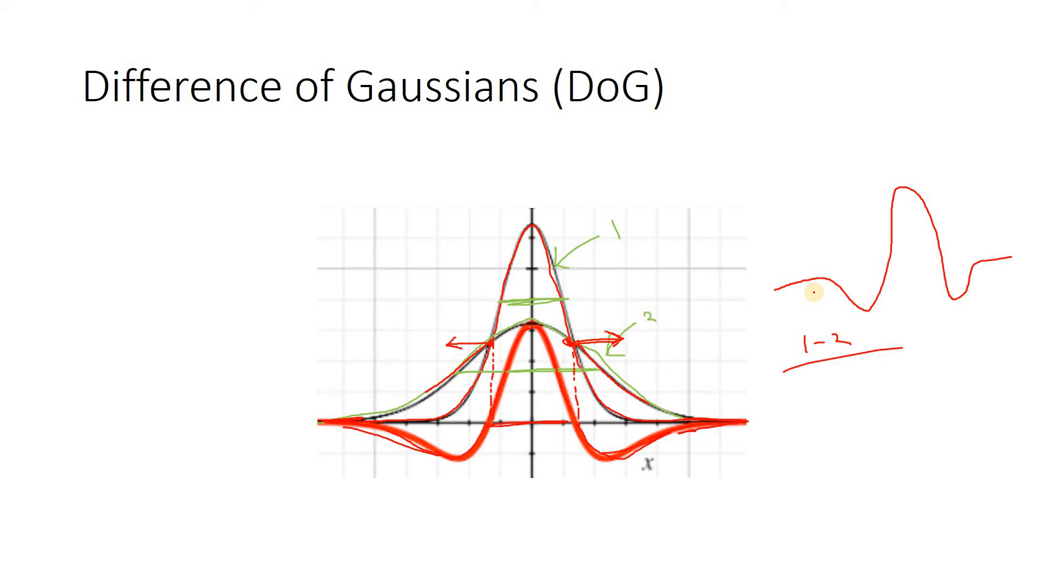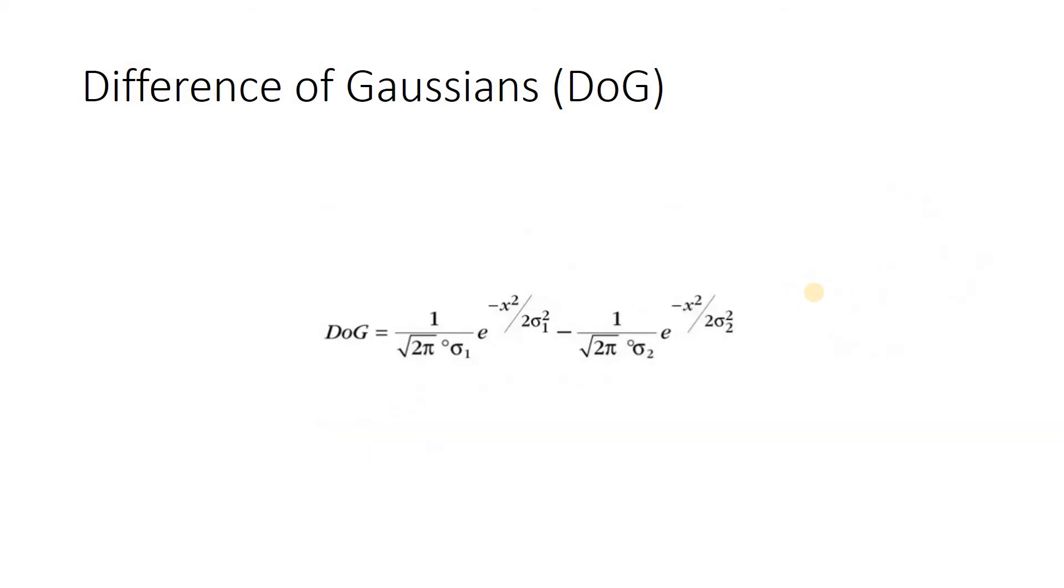This is the intuition. What will be the mathematical equation? Very simple. This is in one dimension I am representing. You can simply consider for two dimension in case of images. So one is having SD sigma 1, another one is having SD sigma 2. You subtract both, that is two different Gaussian signals having different standard deviation, you will be getting your DoG filter. That's it.